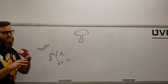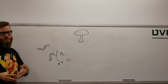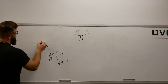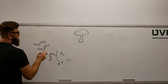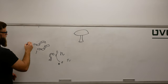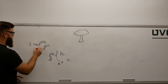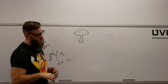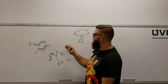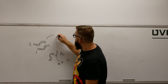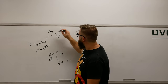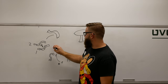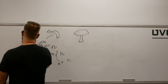Groups of hyphae coming together form something called mycelium. For this life cycle, we've got mating type one and mating type two. These mating types will then meet each other, and at this point we're still at ploidy n.